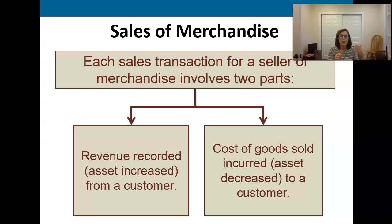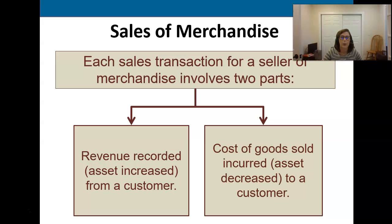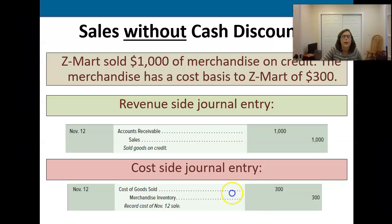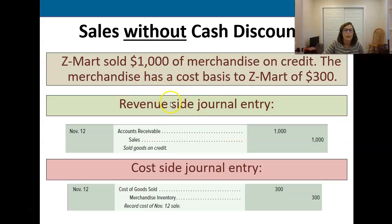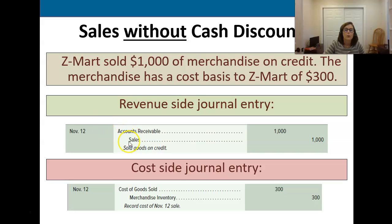The first entry is going to record the revenue. The second one is going to address the cost of goods sold and the reduction in inventory. Here are both of those journal entries that we would make under the perpetual system, and this assumes that we've sold these items on account. The first entry here takes account of the sale itself.